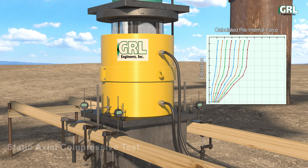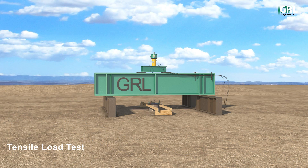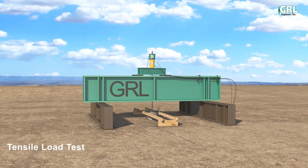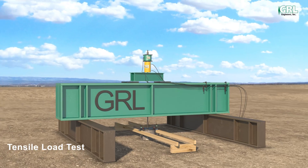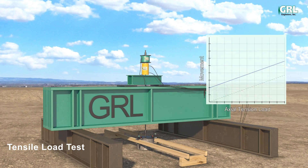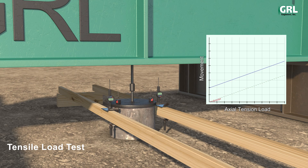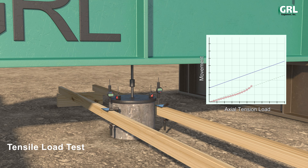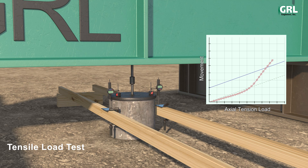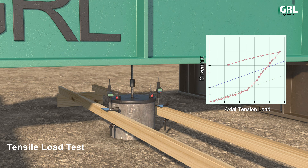Once the static axial tensile test system is arranged, axial tension load is incrementally increased and the associated foundation head movement is recorded. After exceeding the required load or movement, the load is incrementally reduced and the associated foundation head movement again recorded.